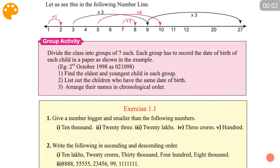Okay students, let's start this group activity. In this group activity, you are going to get divided into groups of 7 each. Each group has to record the date of birth of each child on paper as shown in the example.